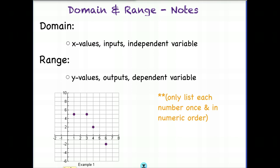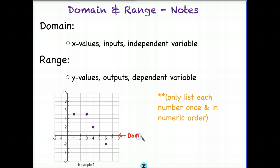Let's take some notes. Get out a piece of paper and a pencil, and write down domain. Domain always represents the x values. Another name that we sometimes use is inputs and also independent variable. If you look at this graph, the x-axis represents the domain — all the x values in your graph represent the domain.